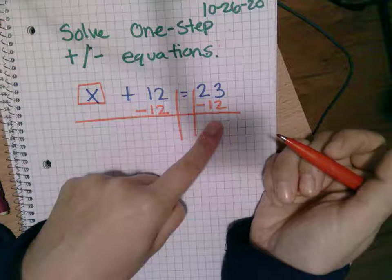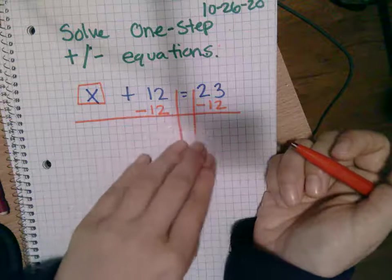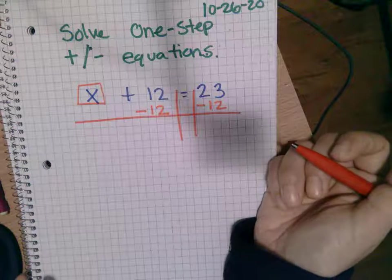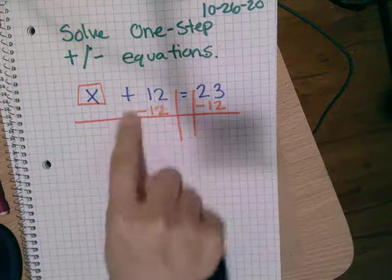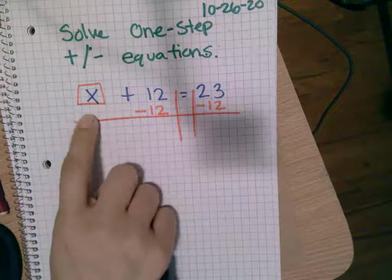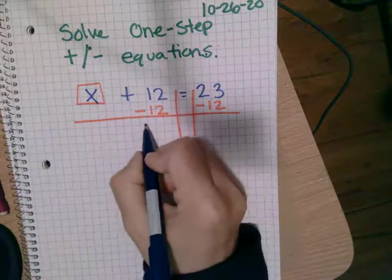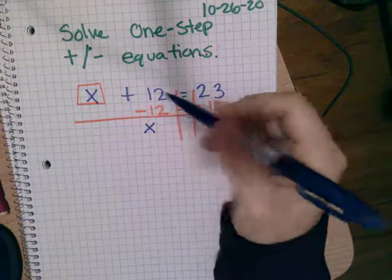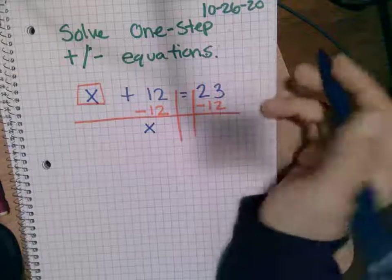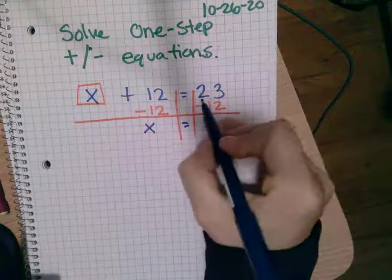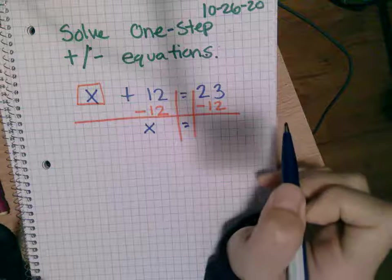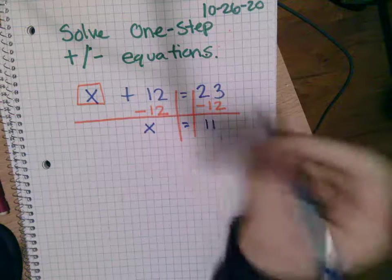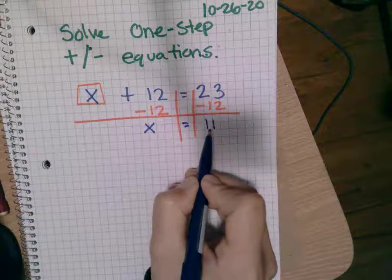Now it's super important that you copy down these notes just like I'm doing them. Please don't take any shortcuts. So here I'm left with zero, but in reality, I still have this x. So I bring down the x because I haven't used it. This is zero, but I don't write it down because it's zero. Now, what is 23 minus 12? 11. So x is equal to 11.